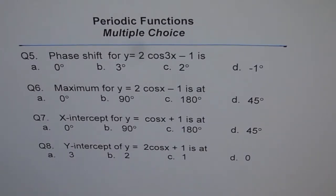Question 7. X intercept for y equals cos x plus 1 is at 0 degree, 90 degree, 180 degree or 45 degrees?